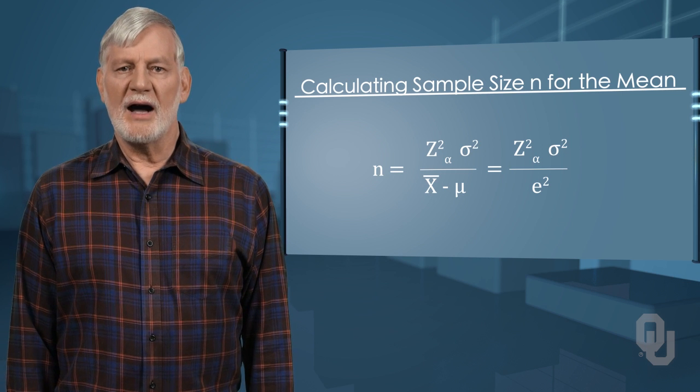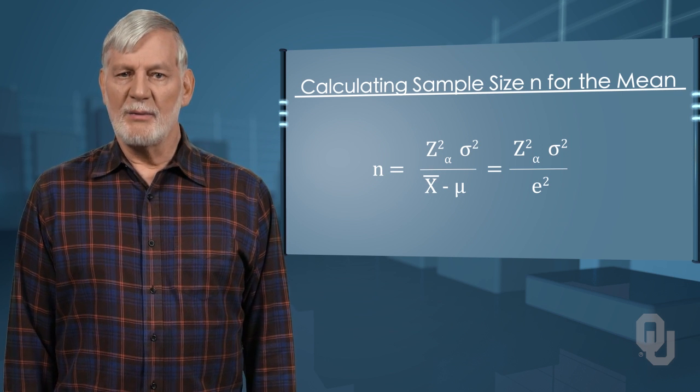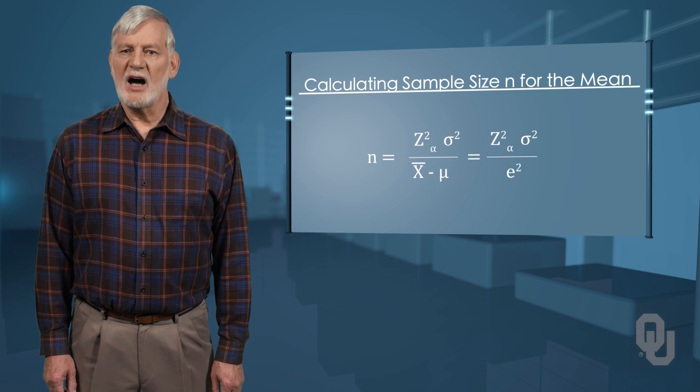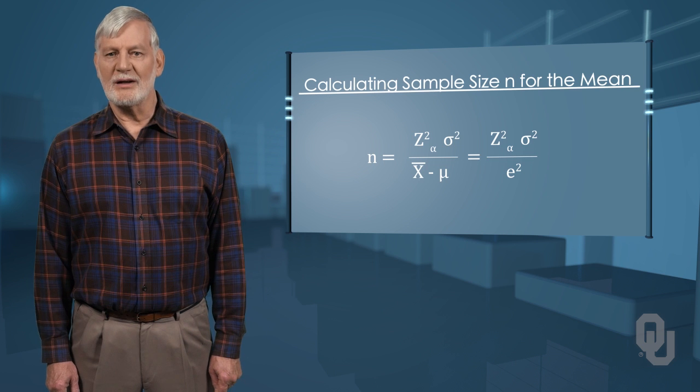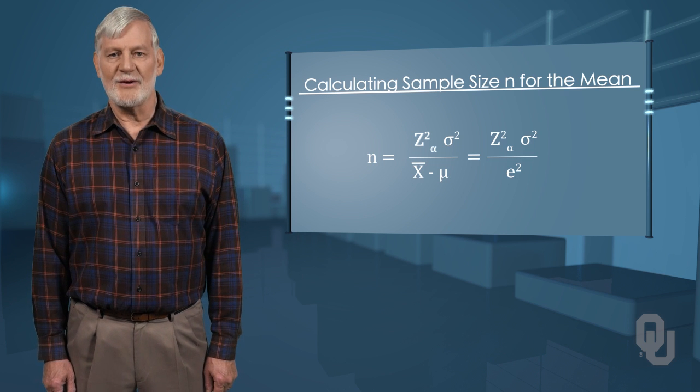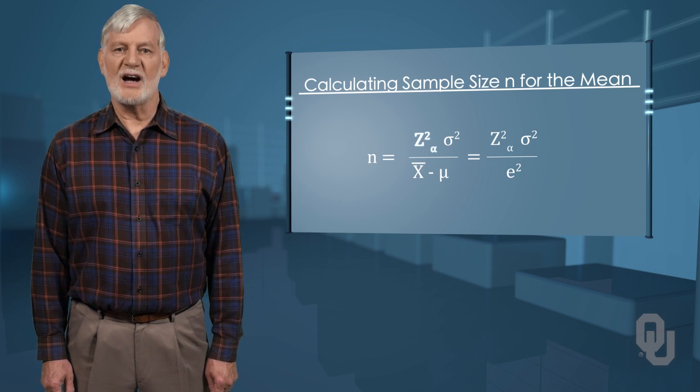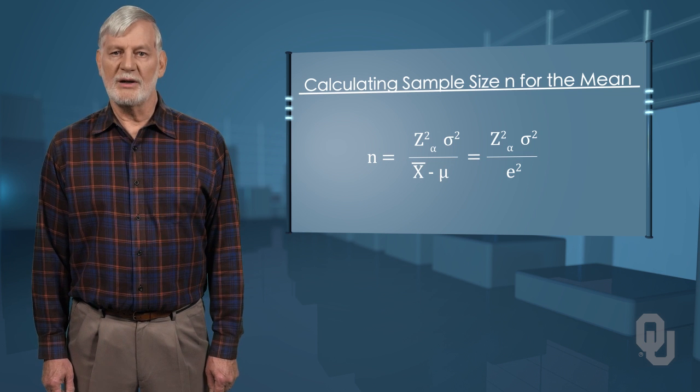If we do this, we have x bar minus mu in the denominator. Because we have not taken the sample yet, we do not know any of the variables in the formula, except we can set z alpha to the level of confidence we desire, just as we did when determining confidence intervals.